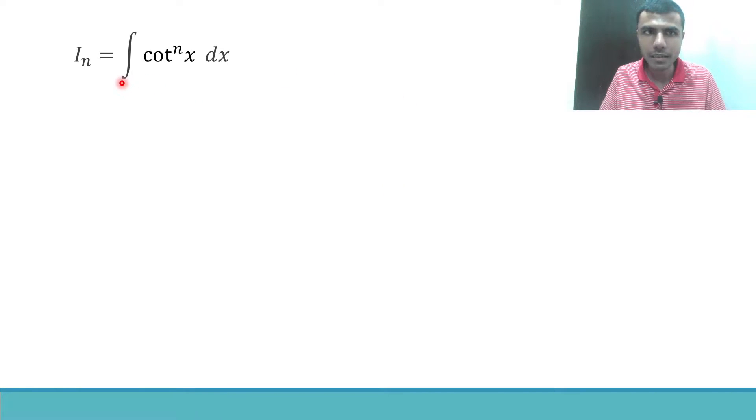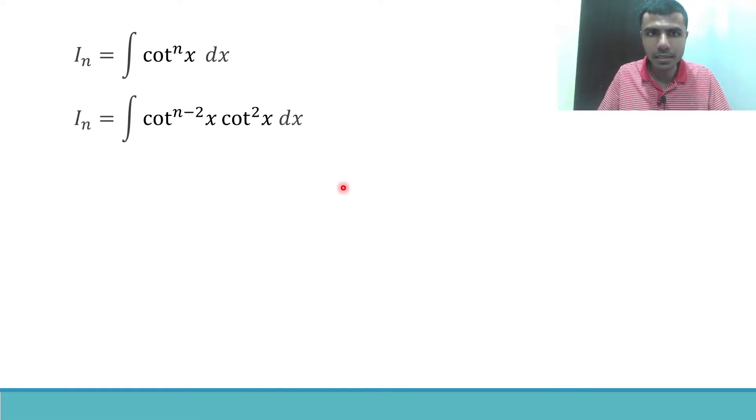Take the given integral as I_n. I_n is integral cot power n x dx. Now this cot power n x dx can be written as integral cot power n minus 2 x into cot square x dx. In case you are new, x power n can be written as x power n minus 2 into x square. In a similar fashion, cot power n x can be written as cot power n minus 2 x into cot square x dx.